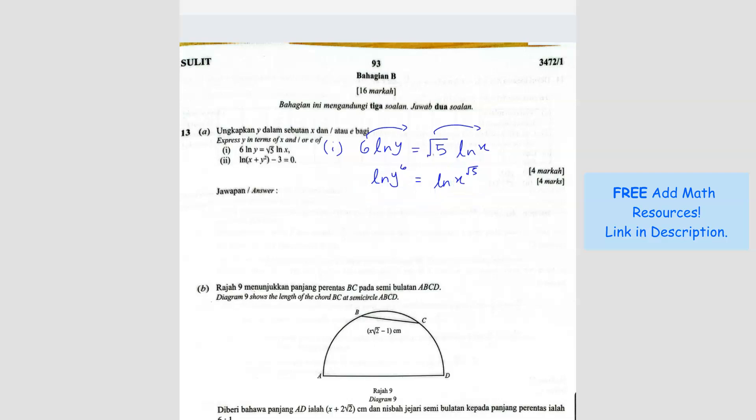So in other words, when you see ln and ln, they can just cancel. So you get y power 6 equals to x power 5. And then they ask for y. So y equals to x. So if I bring the 6 across, it becomes root 6. So root 6 is the same as power 1 over 6. So you get x to the 5 over 6. So this is your answer.